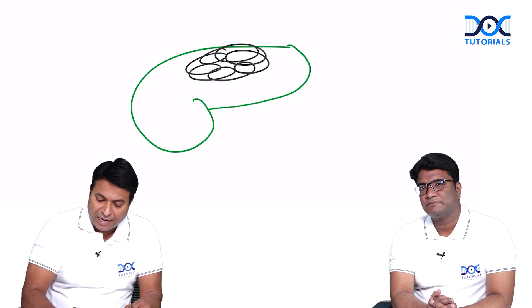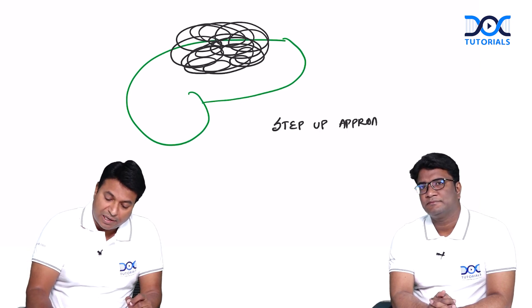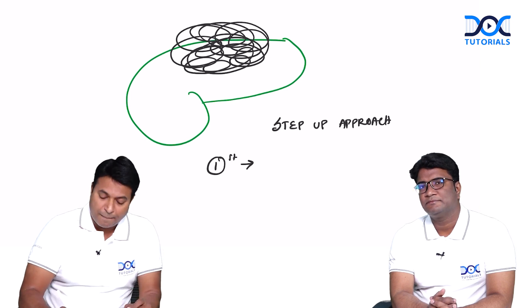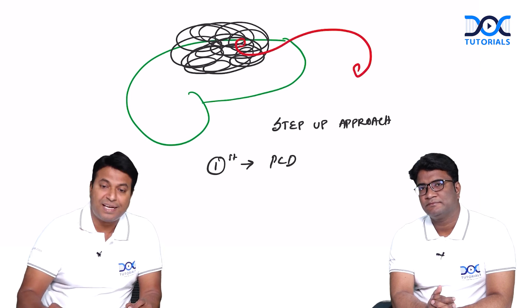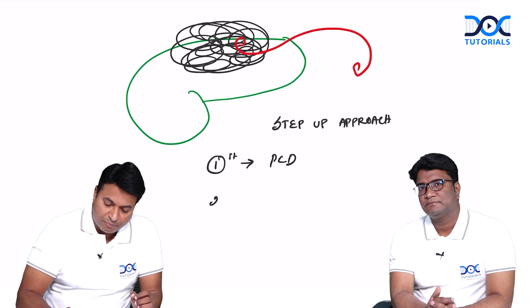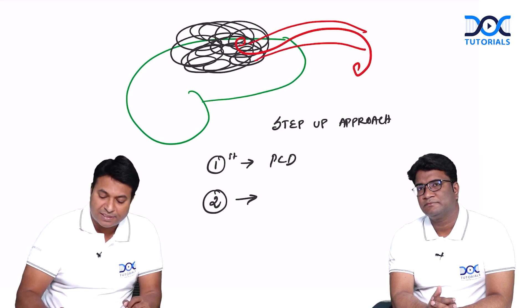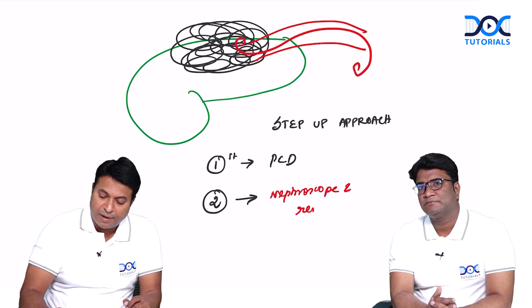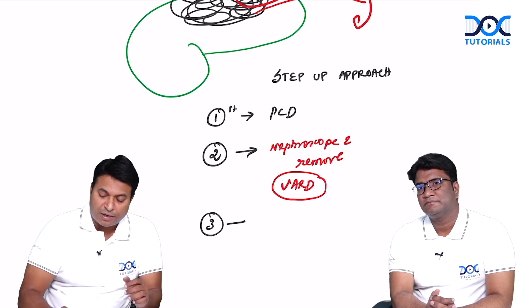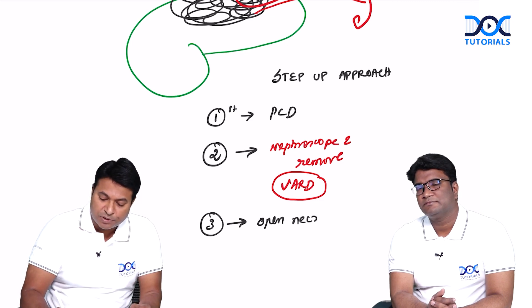This patient will be getting worse because of multi-organ dysfunction with necrosis and collection everywhere. I should deal with this case in a step-up approach. The first step is for the radiologist to put a percutaneous drainage and drain the collection — a PCD done with local anesthesia to drain the pus. The second step: through the PCD tract, if the necrosis is not fully cleared, we form a small opening and pass a nephroscope to remove the debris and necrosis — known as Video Assisted Retroperitoneal Debridement, or VARD. The third step, if there is still necrosis, is open necrosectomy — the last option.